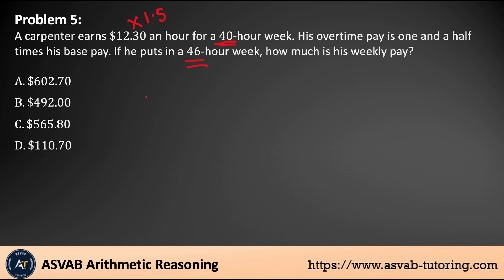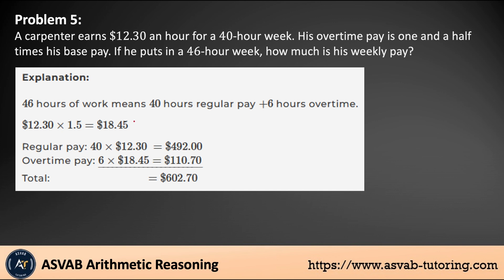First, find the 40-hour regular pay: 40 times $12.30 gives you $492. Then find the overtime rate: 12.30 times 1.5 gives you $18.45. Multiply that by 6 hours of overtime, giving you $110.70. Add them up: $492 plus $110.70 gives you $602.70. That is the correct answer.